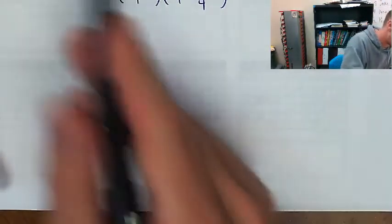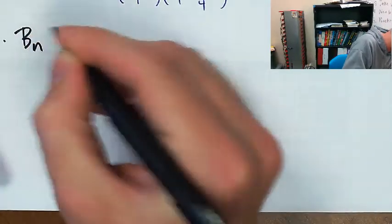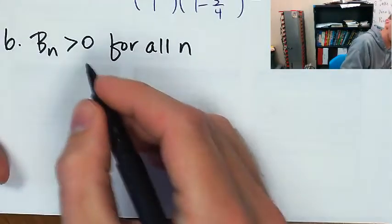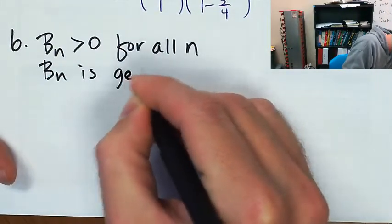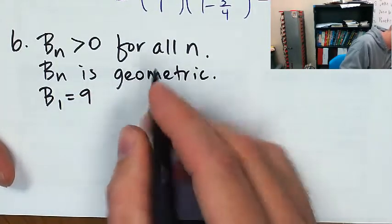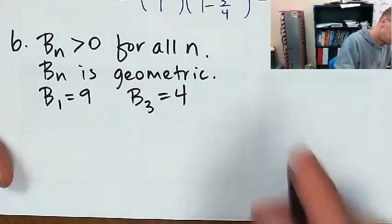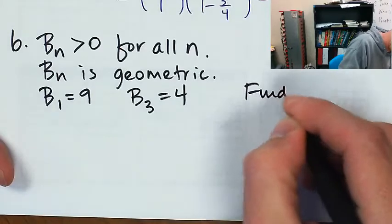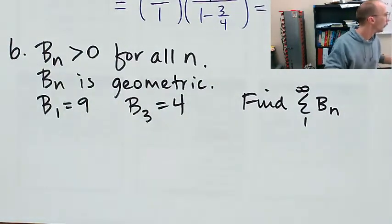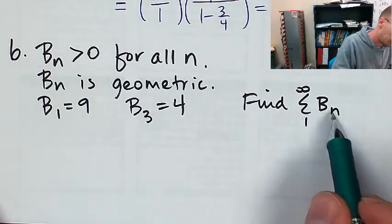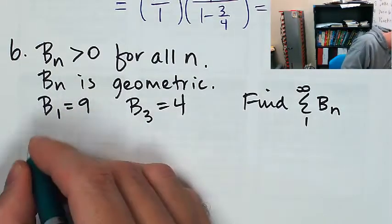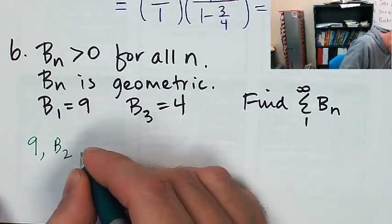Number six: b_n is a geometric sequence of positive terms with b_1 equals 9 and b_3 equals 4. Find the sum from n equals 1 to infinity of b_n. The formula will be the first term times 1 over 1 minus the common ratio, but I don't know the common ratio yet.